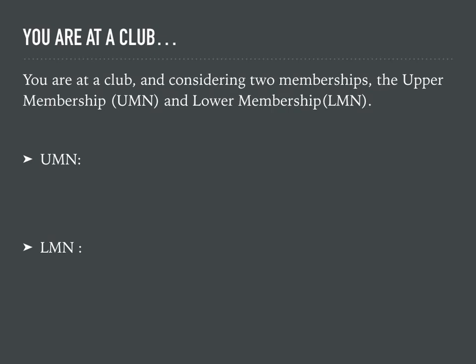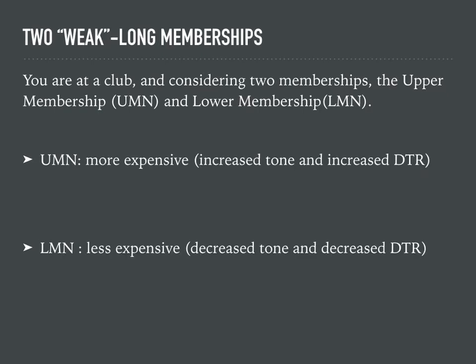Imagine you're at a recreational club considering two memberships: the upper membership and the lower membership. Both memberships present with the sign of weakness. Our currency is tone and deep tendon reflex. The UMN membership is more expensive — it has increased tone and increased DTR. The LMN membership is less expensive, with decreased tone and decreased DTR.